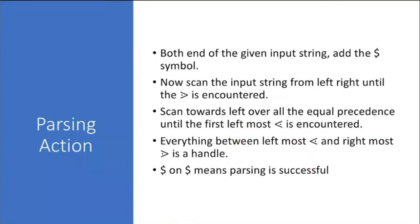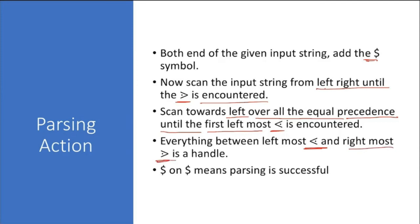Now scan the input string from left to right until the first greater-than is encountered. Then scan backward to the left over any equal-precedence relations until the first less-than is encountered. Everything between the leftmost less-than and the rightmost greater-than is a handle. Dollar on dollar means parsing is successful.